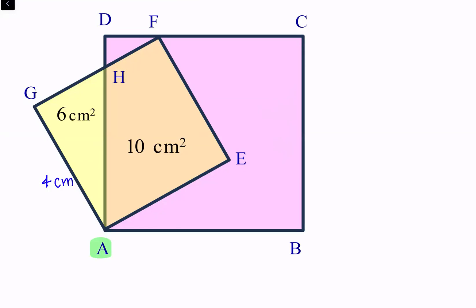If we look at triangle AGH, this particular triangle is a right angle triangle because this angle is 90 degrees. Its area is given as 6 centimeter square, so area is we know is half of base into height.